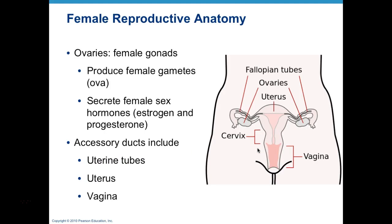Now let's jump into the female reproductive system. Our ovaries are the primary reproductive organ, and the main purpose is to produce the egg, or ova. They also secrete estrogen and progesterone. Other accessory ducts are the uterine tubes, which have three different names: uterine tube, fallopian tube, and oviduct — all referring to the same structure that connects to the uterus.